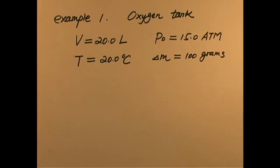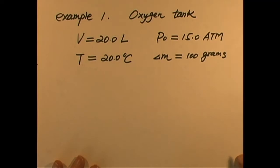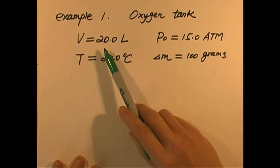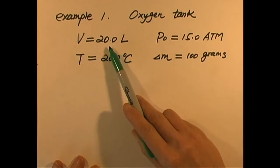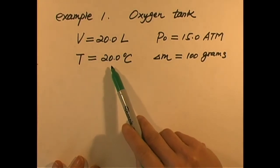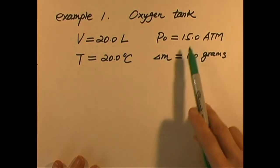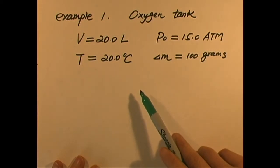We just learned about ideal gases, and let's use the equation of state for ideal gas to solve a couple problems to get used to it. The first one is oxygen tank. We have an oxygen tank of volume about 20.0 liters, and you can see all the numbers given are in three significant figures. So our answer should be in three significant figures.